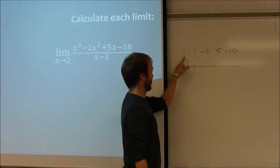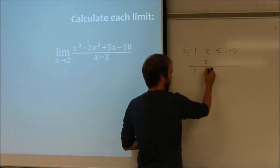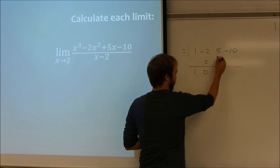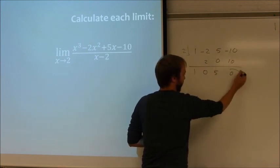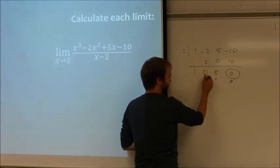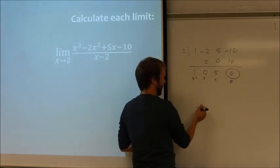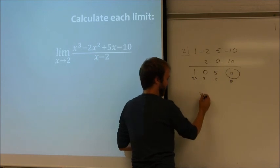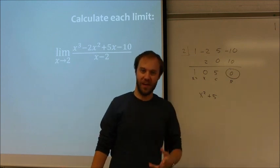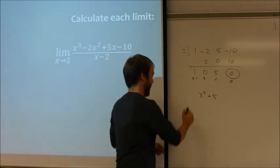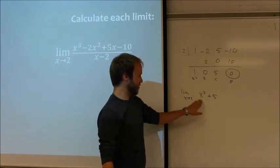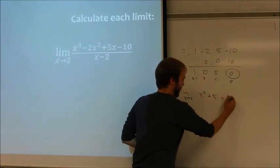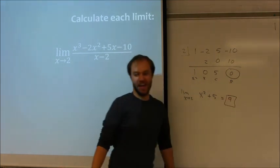I don't need to do that in this case, though. So 2 times 1 is 2. You add, you get 0. 2 times 0 is 0. I get 5. 2 times 5 is 10. I get 0. That's my remainder, constant, my x, and my x squared. So as a result, I'm left with x squared plus 5. Once I've divided out the denominator, I want the limit as x approaches 2. So at this point, I can merely substitute 2 squared plus 5 is equal to 9. And that's my limit.